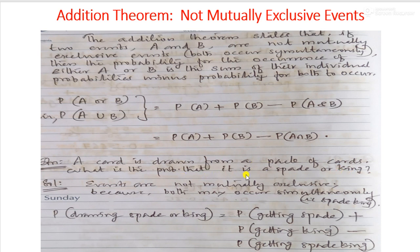The probability of drawing a spade or king is not mutually exclusive because a card can be both a spade and a king at the same time — the spade king. So, P(spade or king) equals P(spade) plus P(king) minus P(spade king), where the joint occurrence of spade king is subtracted.